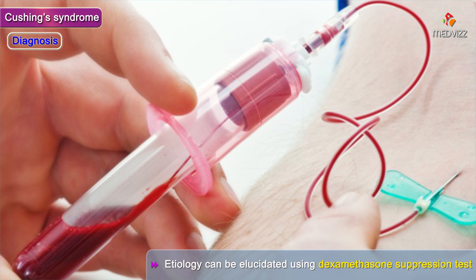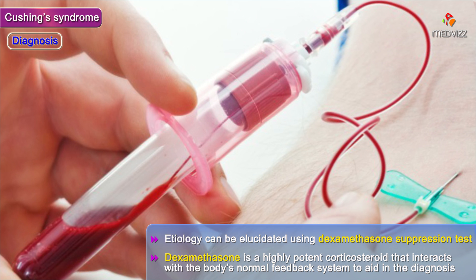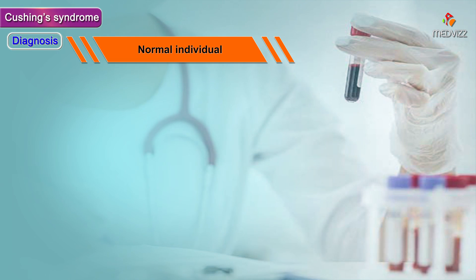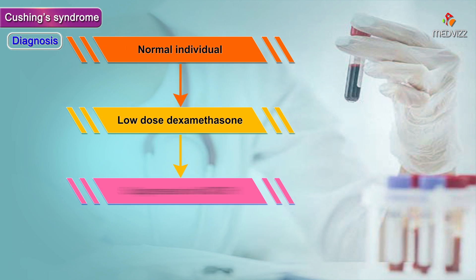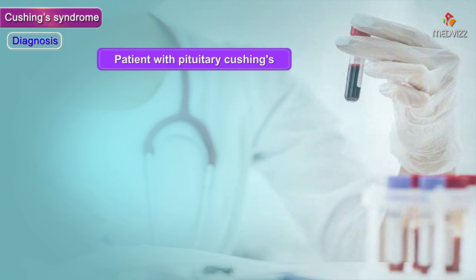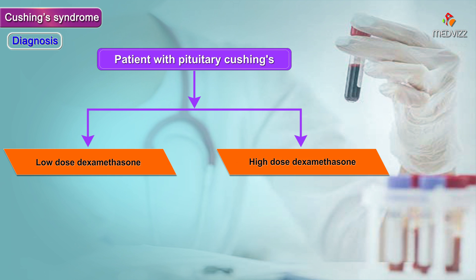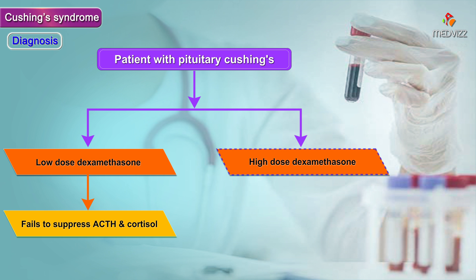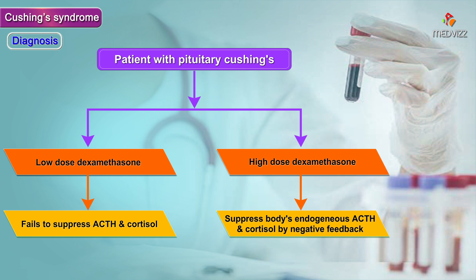Diagnosis. The etiology of Cushing syndrome can be elucidated using the dexamethasone suppression test. Dexamethasone is a highly potent corticosteroid that interacts with the body's normal feedback system to aid in the diagnosis of Cushing's. In a normal individual, a low dose of dexamethasone causes suppression of ACTH and thus reduces cortisol levels. In a patient with pituitary Cushing's, low dose will fail to suppress ACTH and cortisol.